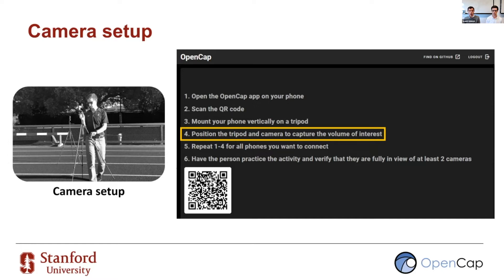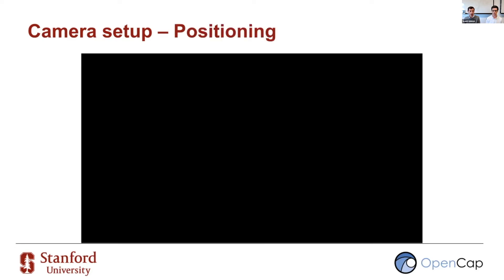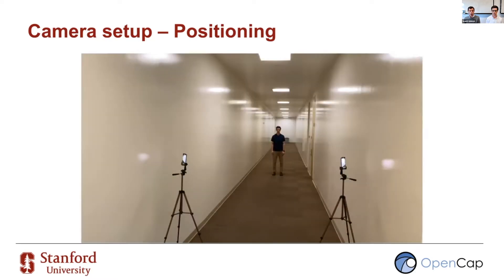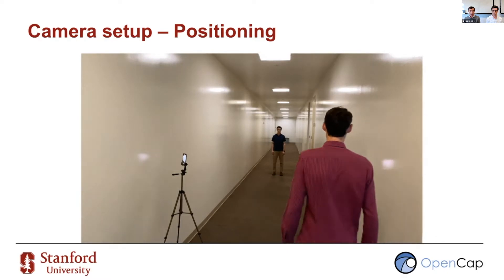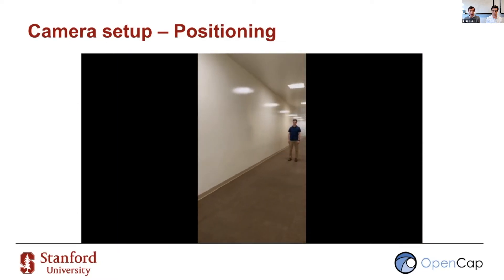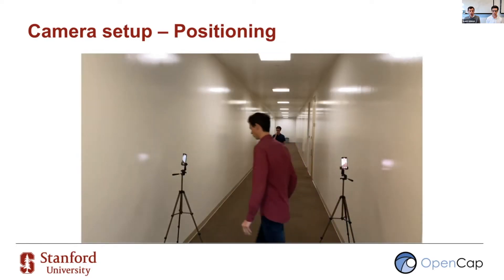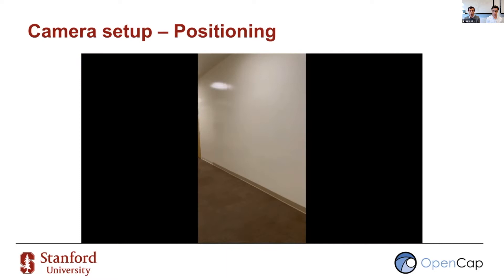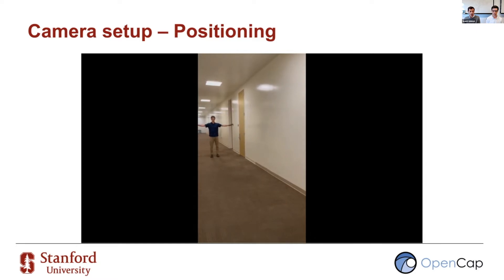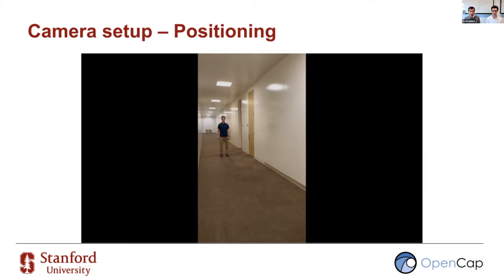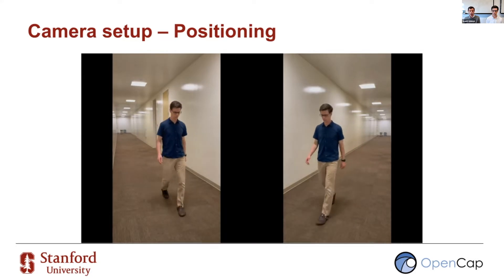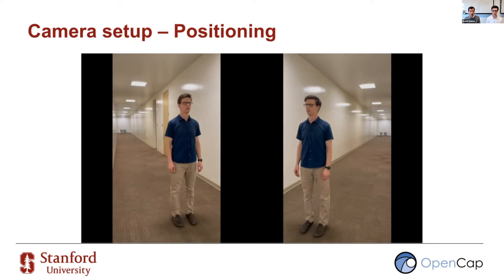Here is a short video that describes how to optimize the positioning of your cameras in a narrow hallway. Try to position the cameras to maximize the spread between them. You can visualize the field of view for each camera, not just the position. Align the right edge of the field of view with the left side of the subject, and the left edge with the right side. Make sure the subject is visible by at least two cameras at all times.